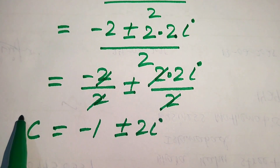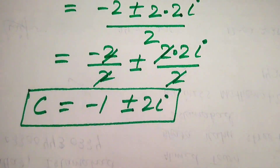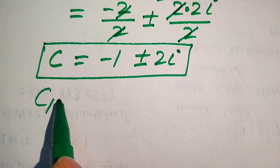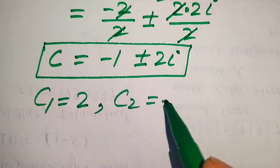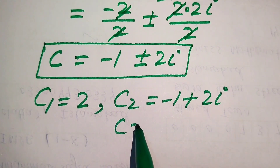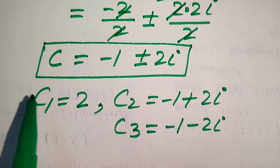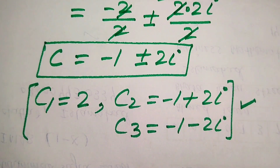These are the two complex roots of the given equation. Finally, there are three roots: c₁ equals 2, c₂ equals minus 1 plus 2 iota, and c₃ equals minus 1 minus 2 iota. These are the three roots of the given equation and this is our final answer. Thank you so much for watching this video — please subscribe to my channel for more exciting videos.